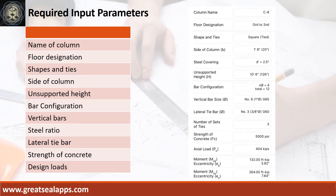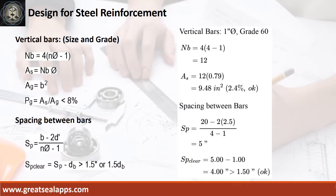Factored axial load 404 kips, factored moment at x-axis 132 foot-kips with EX equals 3.92 inches, and factored moment at y-axis 264 foot-kips with EY equals 7.84 inches. Given 12 pieces of 1 inch diameter vertical bars, the area of steel is 9.48 square inches with steel ratio of 2.4%, and spacing between bars is 5 inches for 4 inches clear spacing.